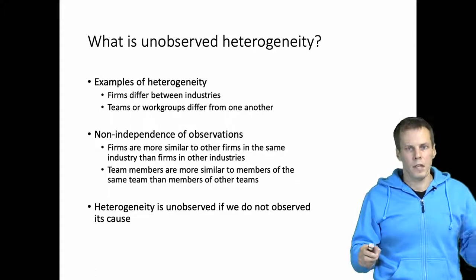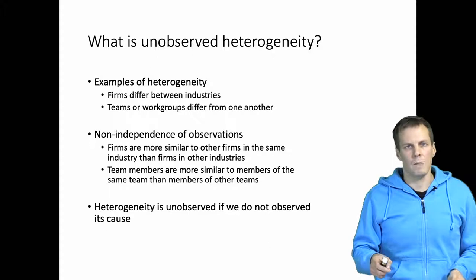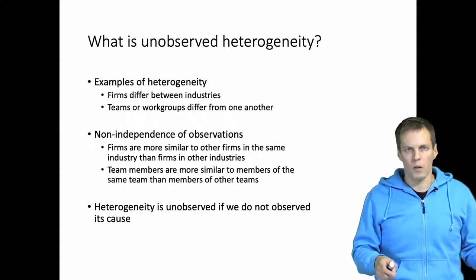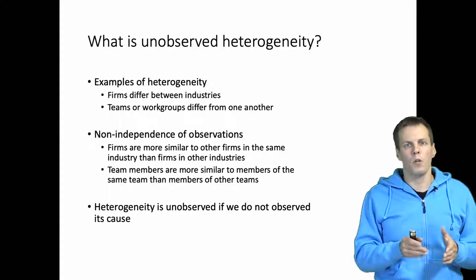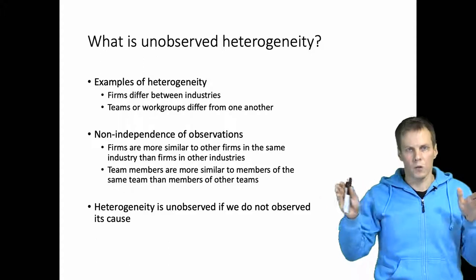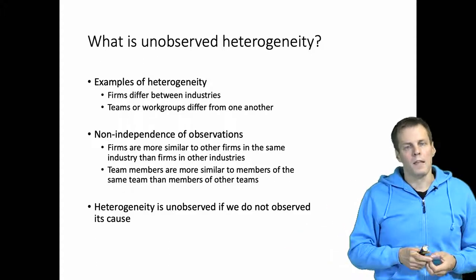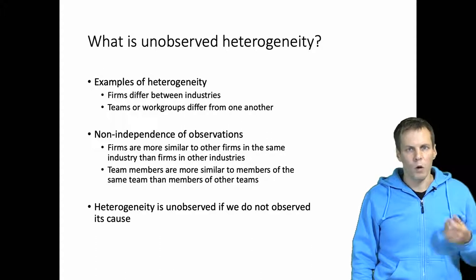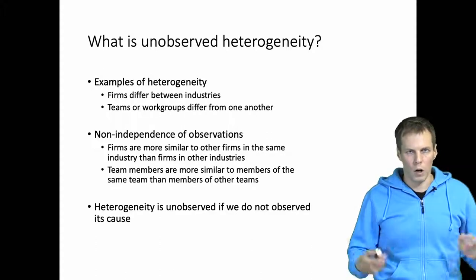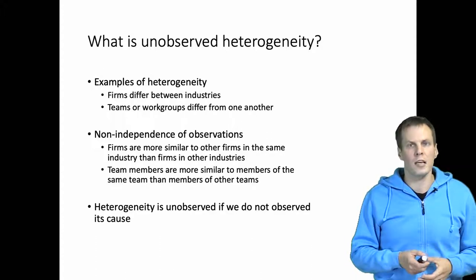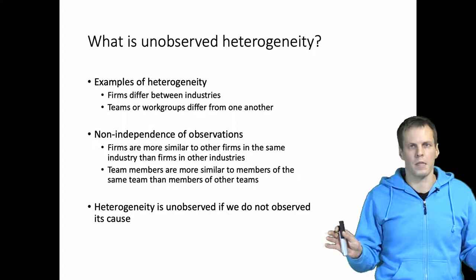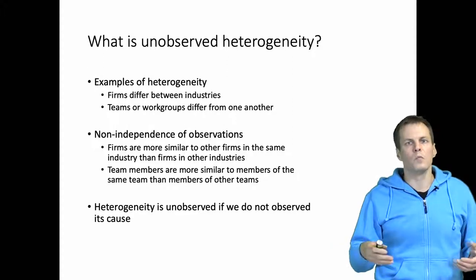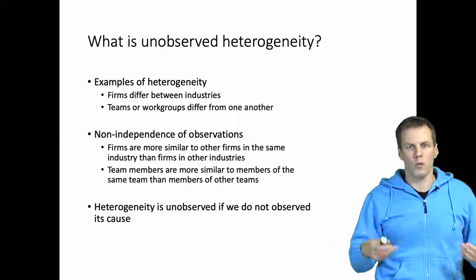There is team-level heterogeneity if people who are in the same team are more similar to one another than people who work in two different teams. This heterogeneity is unobserved if we don't observe its cause. So unobserved heterogeneity refers to any systematic differences between groups or clusters whose causes we don't observe.